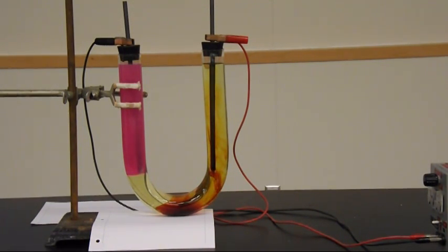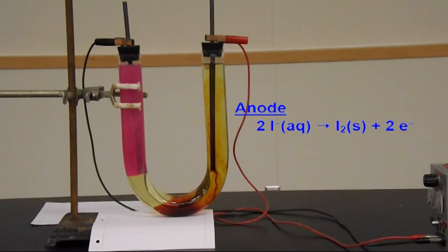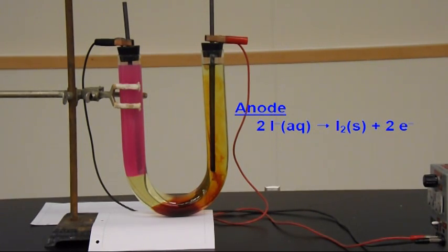On one of the cells we clearly have I minus reacting to produce I2. And that would be with plus two electrons. The cell potential for that reaction is 0.536. Right there.